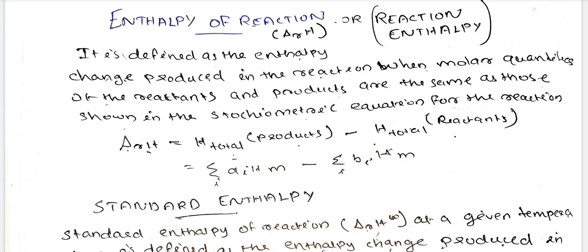What is reaction? What is the enthalpy of reaction? We will be able to discuss delta H. The enthalpy of reaction is defined as the enthalpy change produced in the reaction when molar quantities of the reactants and products are the same as those shown in the stoichiometric equation for the reaction.